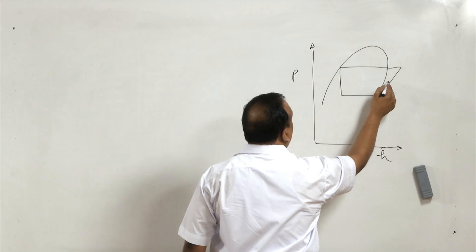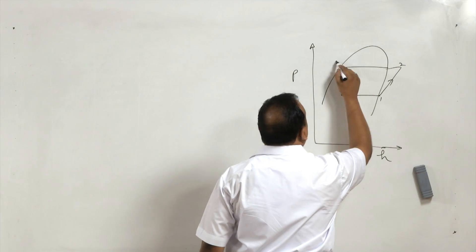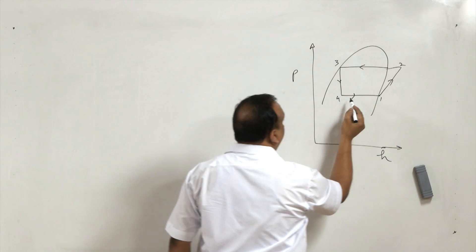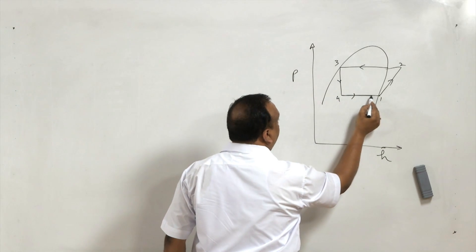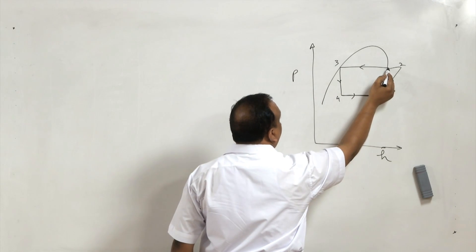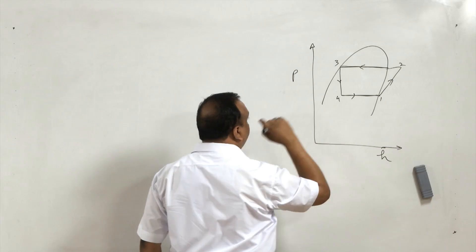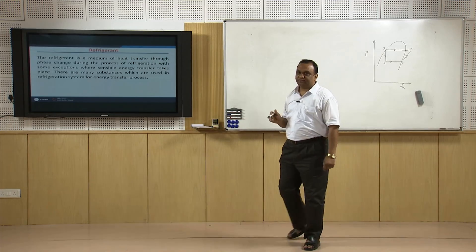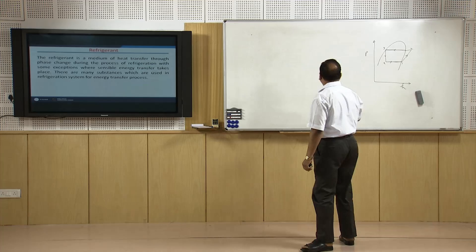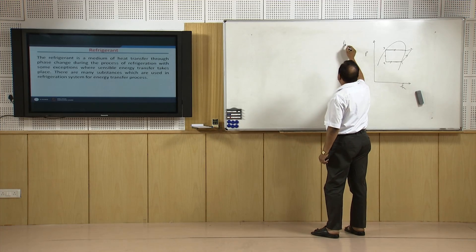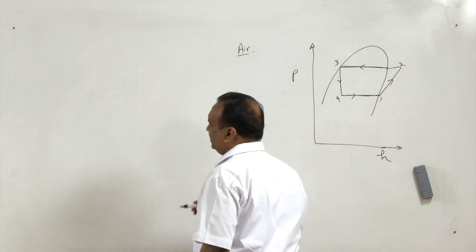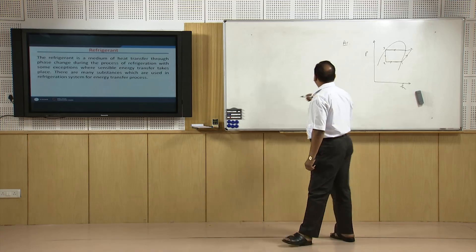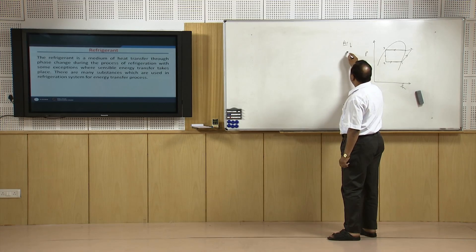On the pressure-volume diagram, points 1, 2, 3, 4 show the cycle — the refrigerating effect is attained through phase change, and condensation of refrigerants also takes place during the process. In most cases there is a phase change, but there are some exceptions — like the air refrigeration system, where there is no phase change.